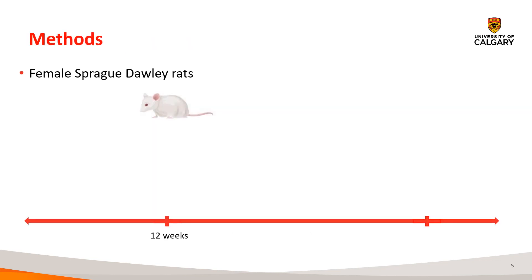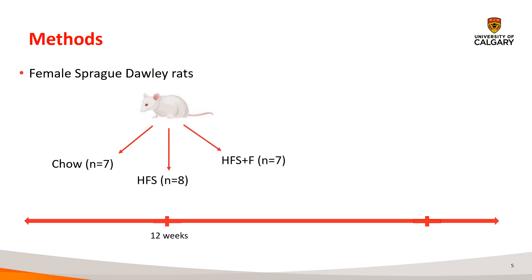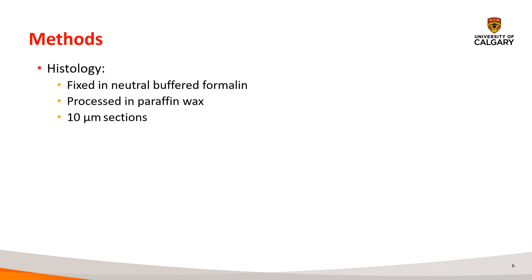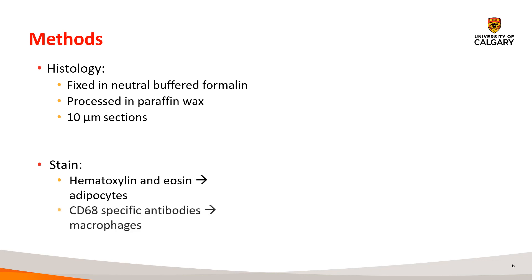In this study, 12-week-old female Sprague-Dawley rats were randomized into three distinct diet-based groups: a control group fed chow, a group fed a high-fat, high-sucrose diet, and a group fed a high-fat, high-sucrose diet with a prebiotic fiber supplementation. Rats were harvested at 24 weeks and the mesenteric fat was collected. The fat was then processed and stained with H&E for the adipocytes, and CD68-specific antibodies for the macrophages.